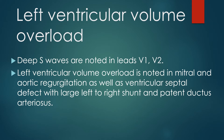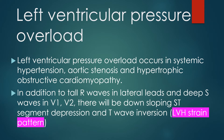Left ventricular volume overload is noted in mitral and aortic regurgitation, ventricular septal defect with large left-to-right shunt, and patent ductus arteriosus. Left ventricular pressure overload occurs in systemic hypertension, aortic stenosis, and hypertrophic obstructive cardiomyopathy. In addition to tall R waves in lateral leads and deep S waves in V1 and V2, there will be downsloping ST segment depression and T wave inversion, known as left ventricular hypertrophy with strain pattern.